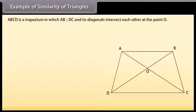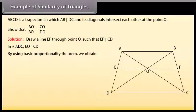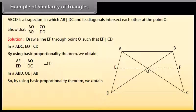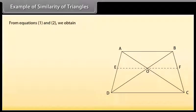ABCD is a trapezium in which AB is parallel to DC and its diagonals intersect each other at point O. Show that AO upon BO equals CO upon DO. Draw a line EF through point O such that EF is parallel to CD. In triangle ADC, EO is parallel to CD; by using basic proportionality theorem we obtain AE upon ED equals AO upon OC — mark it as one. In triangle ABD, OE is parallel to AB; by basic proportionality theorem we obtain ED upon AE equals OD upon BO, which implies AE upon ED equals BO upon OD — mark it as two. From equations one and two we obtain AO upon OC equals BO upon OD, which implies AO upon BO equals OC upon OD.